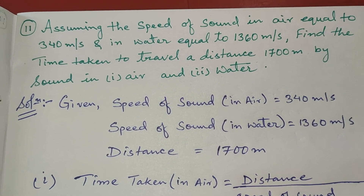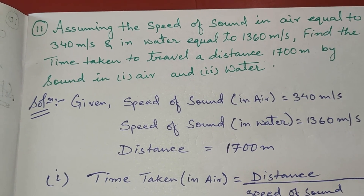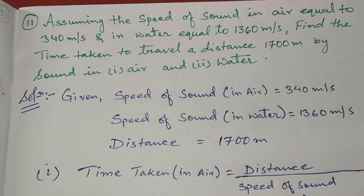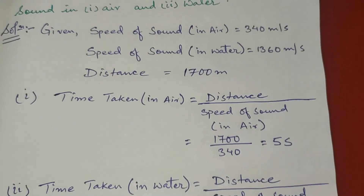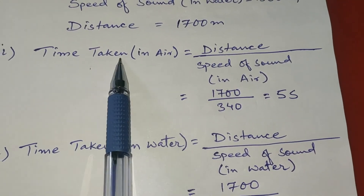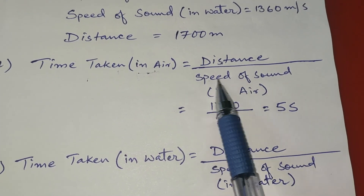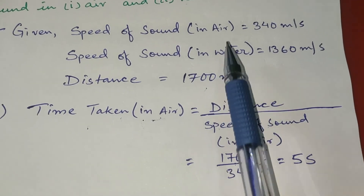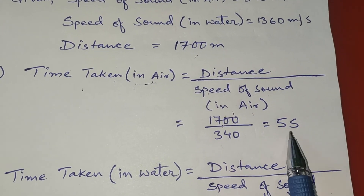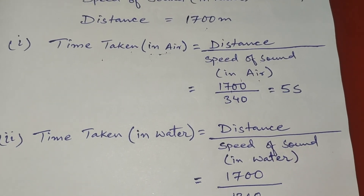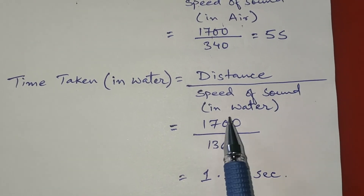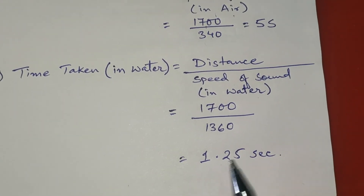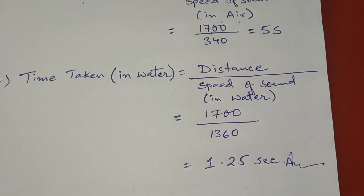Question 11: assuming the speed of sound in air is 340 m/s and in water is 1360 m/s, find the time to travel 1700 meters in each. Time in air = 1700 ÷ 340 = 5 seconds. Time in water = 1700 ÷ 1360 = 1.25 seconds. Thank you.